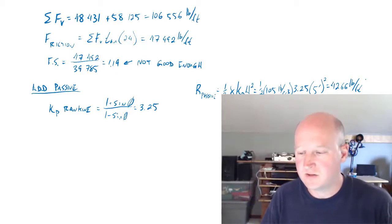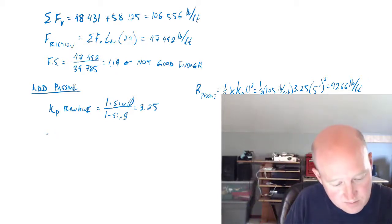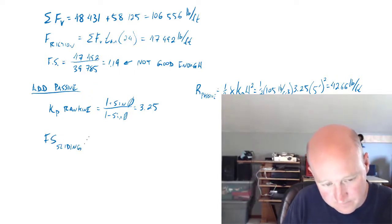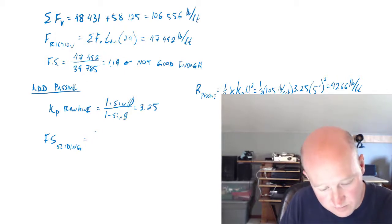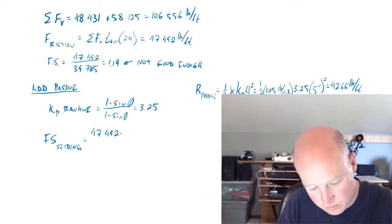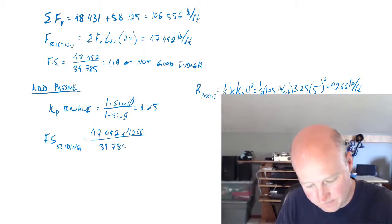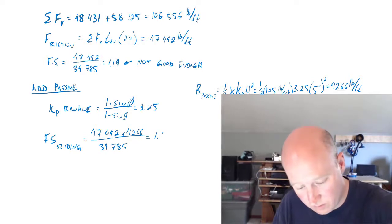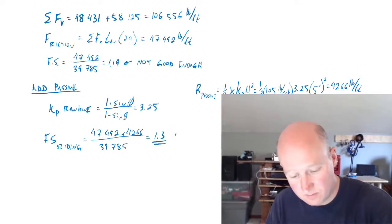So we'll recheck factor of safety again. That's going to be our previous value of friction plus now the passive pressure. So we get 1.3, which is, that's fine, we can use that.